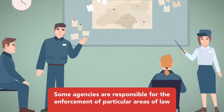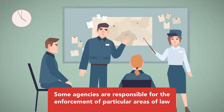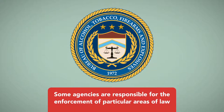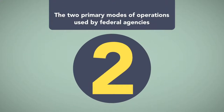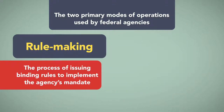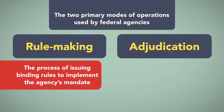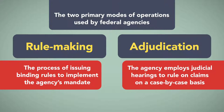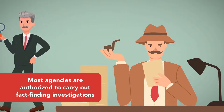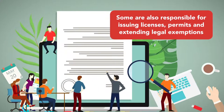Finally, some agencies are responsible for the enforcement of particular areas of law. One such example is the Bureau of Alcohol, Tobacco, Firearms, and Explosives. The two primary modes of operations used by federal agencies are rulemaking — the process of issuing binding rules to implement the agency's mandate — and adjudication, in which the agency employs judicial hearings to rule on claims on a case-by-case basis. In addition, most agencies are authorized to carry out fact-finding investigations. Some are also responsible for issuing licenses, permits, and extending legal exemptions for the areas of governance under the agency's purview.